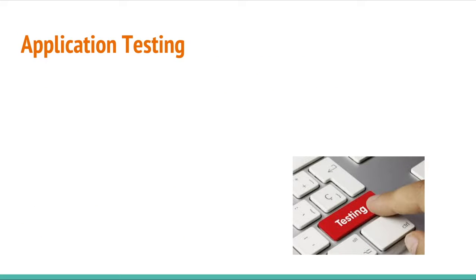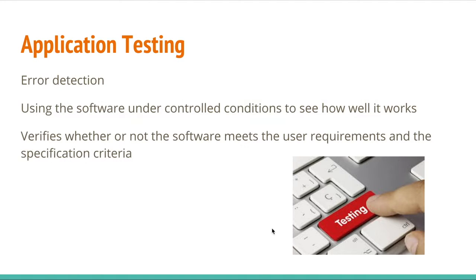Application testing. So, the type of testing we're talking about is application testing, testing the software. And it's not just error detection, but it's using the software under controlled conditions to see how well it works, and verifies whether or not the software meets the user requirement in the specification criteria, which was decided at the beginning of the software development lifecycle.